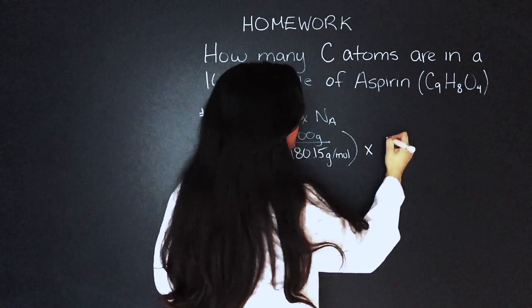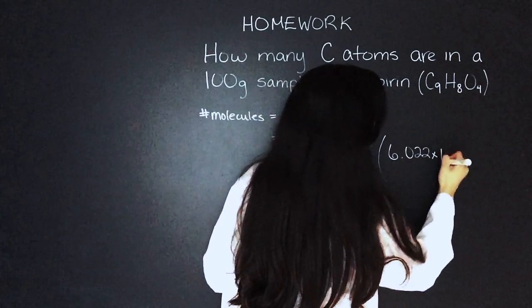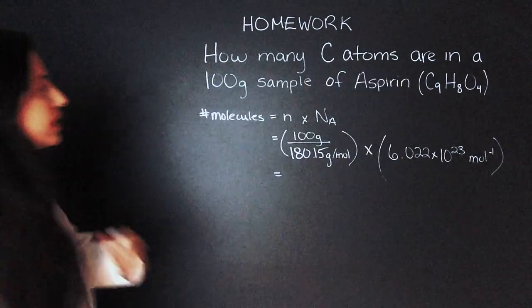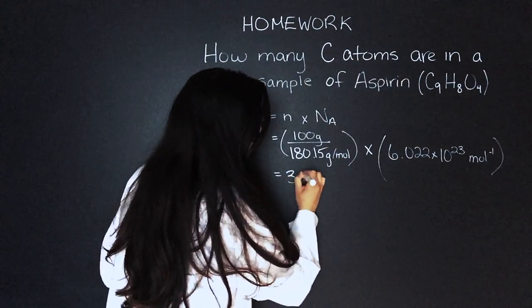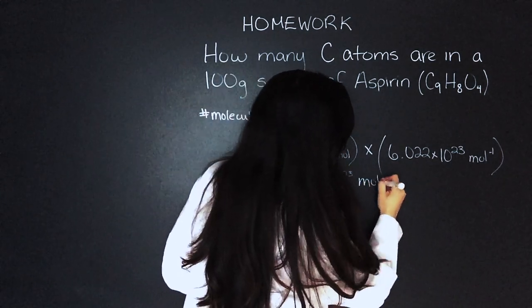The entire thing times Avogadro's number, 6.022 times 10 to the 23 mole to the negative 1. So that gives us 3.34 times 10 to the 23 molecules.